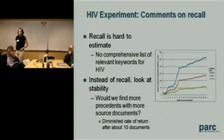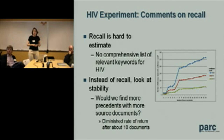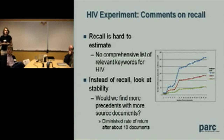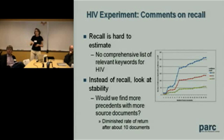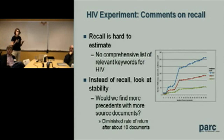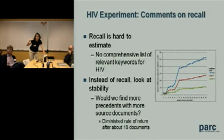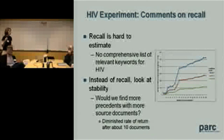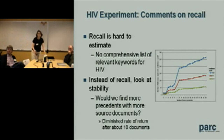What about recall? For the same reason, recall is pretty hard to estimate — there isn't a comprehensive list of HIV inferences to use as ground truth. One thing we've looked at to get some sense of recall is stability: how sensitive is the initial keyword pool to the cutoff we give — the number of documents we take from a Google query? The interesting thing is that for various corpus cutoffs, there does seem to be diminishing return after around 10 source documents. So for a fairly small training set, we're getting most of what the algorithm can offer.